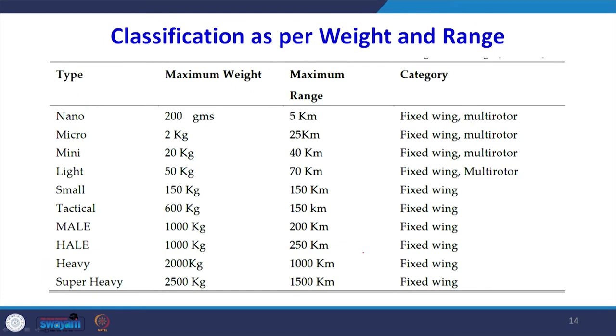Each category has its own specific applications and most of the time we use micro drones where the weight is not very heavy. A classification table gives us categories from nano, micro, mini, light, small, tactical, MALE, and HALE, through to medium altitude, high altitude, heavy, and super heavy — classified according to both weight and range. We select the drone according to the range of our application.